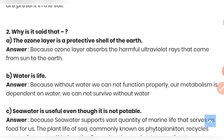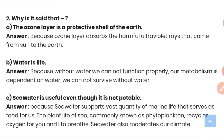Question 2: Why is it said that the ozone layer is the protective shell of the earth? The ozone layer absorbs the harmful ultraviolet rays that come from the sun to the earth. That is why the ozone layer is called the protective shell of the earth.